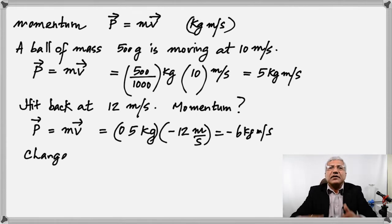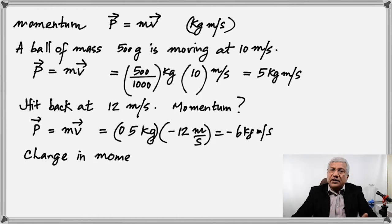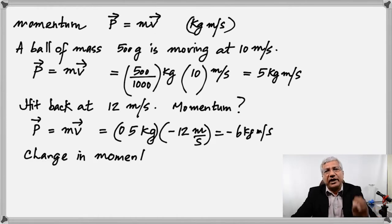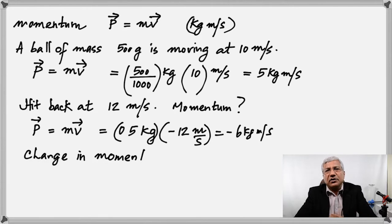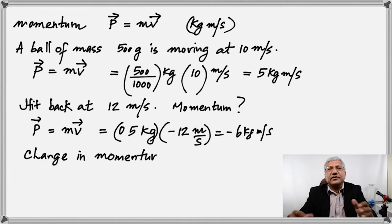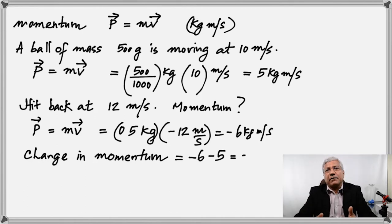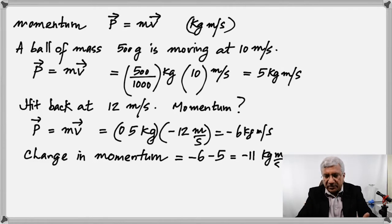What's the change in momentum? Whenever you're asked to find the change, you take final minus initial. The final momentum is negative 6 and the initial is 5. So the change in momentum is negative 6 minus 5, which is negative 11 kilogram meter per second.